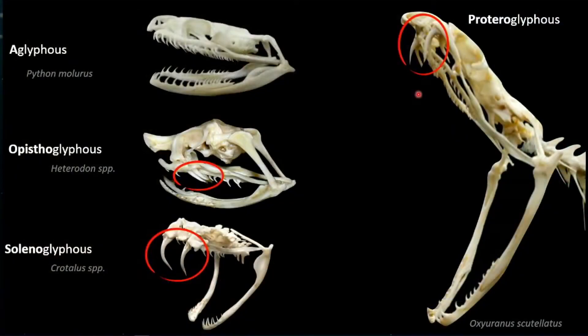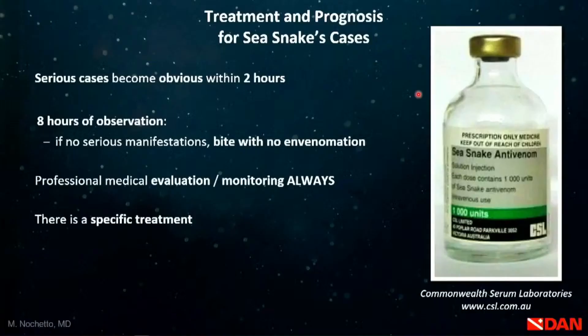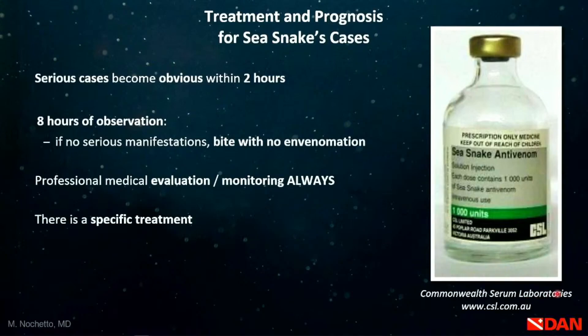Send the patient for evaluation; they should be observed for several hours to rule out serious issues. If the toxin is neurotoxic, people can die because they can't move their respiratory muscles. Serious envenomations will be obvious within two hours. After about eight hours with no serious manifestations and no respiratory depression, the doctor will likely determine it's a bite without envenomation. Always seek medical evaluation. There is specific antivenom developed by the Commonwealth Serum Laboratories of Australia, available in regions where these animals are commonly found.